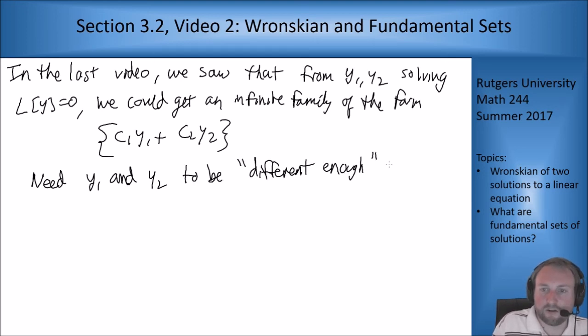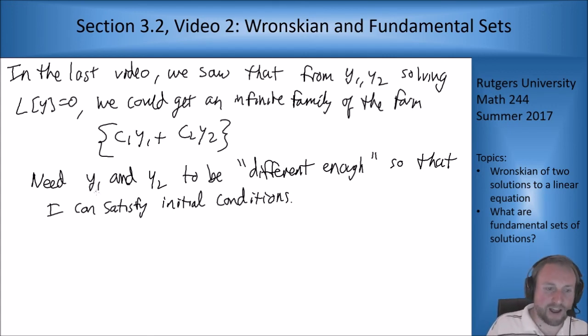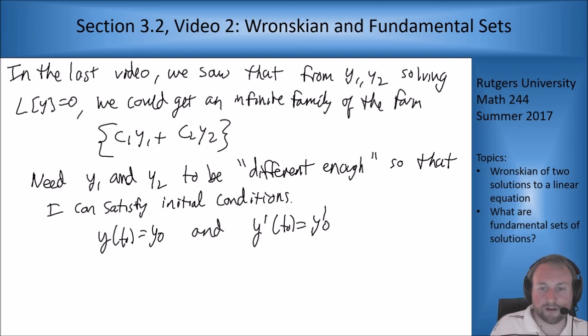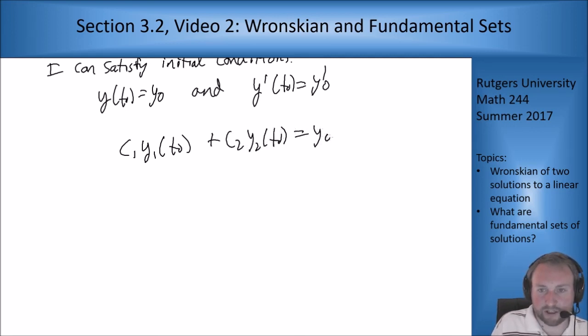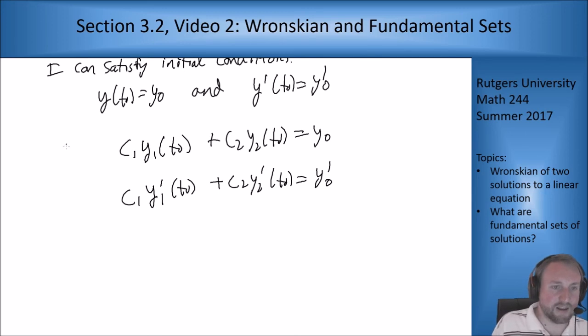So we need y1 and y2 to be different enough so that I can satisfy my initial conditions. If I have initial conditions y of t0 equals y0 and y prime of t0 equals y prime 0 and I want my y to be of the form in the set above, then I have to have that c1y1 of t0 plus c2y2 of t0 equals y0 and c1y1 prime of t0 plus c2y2 prime of t0 equals y prime of 0.